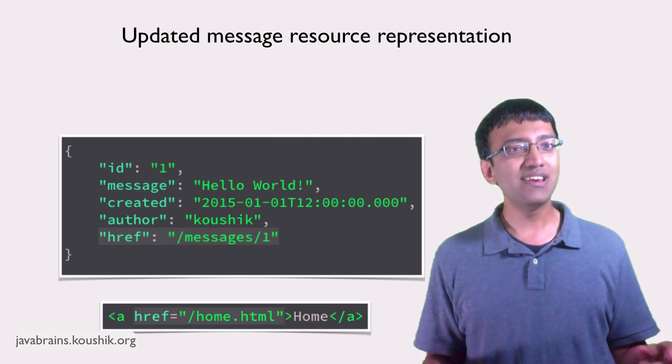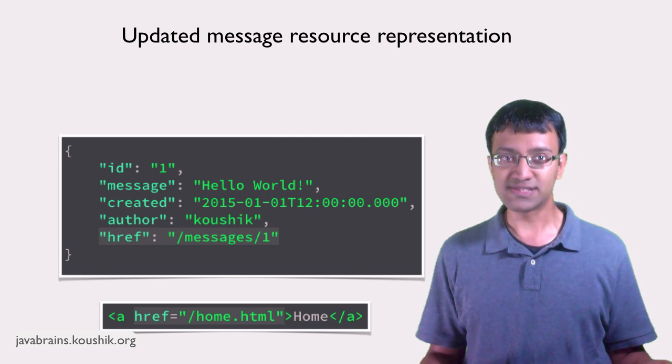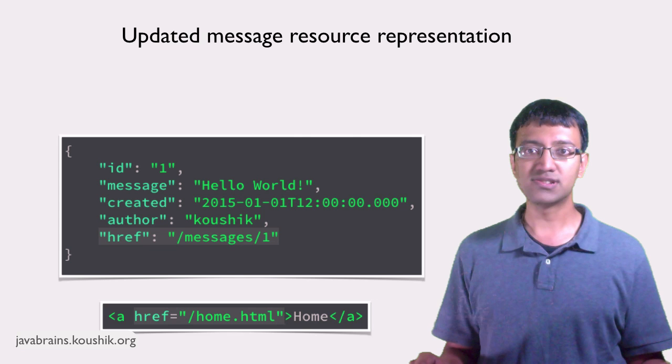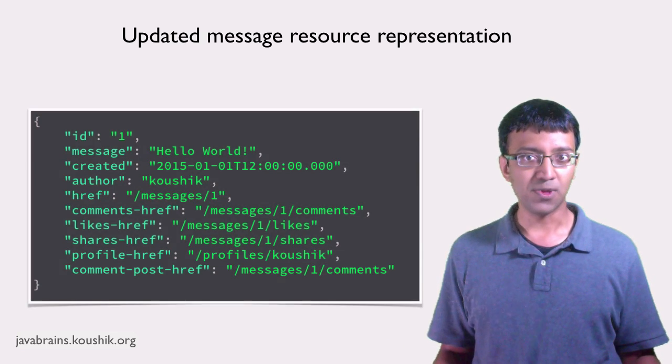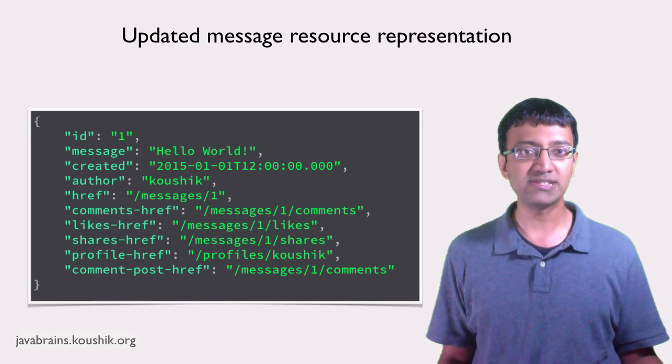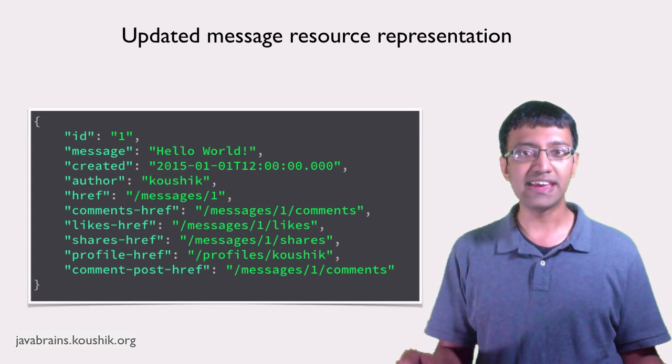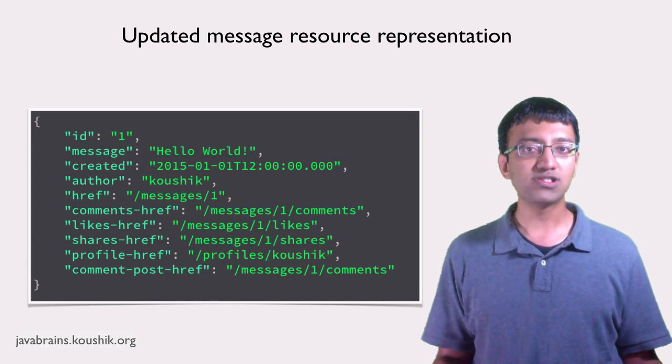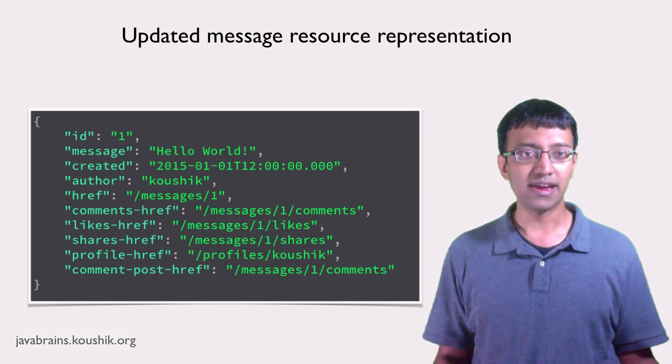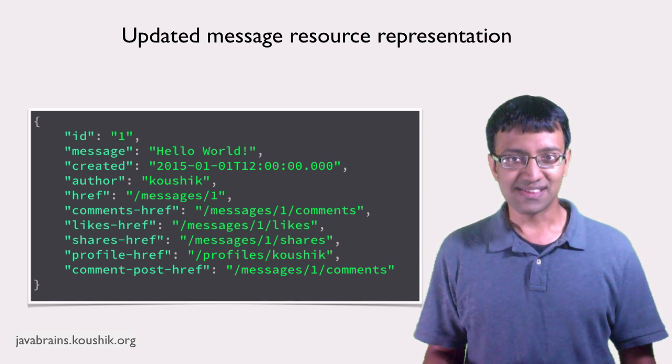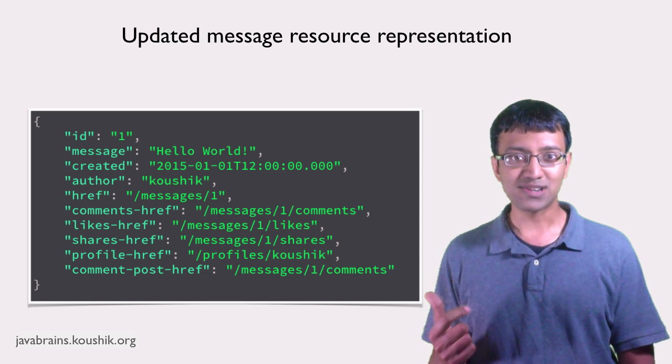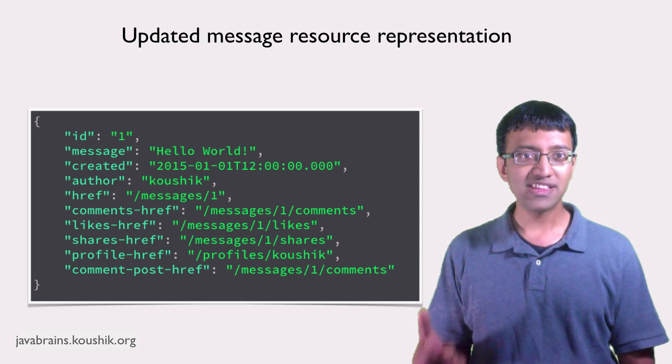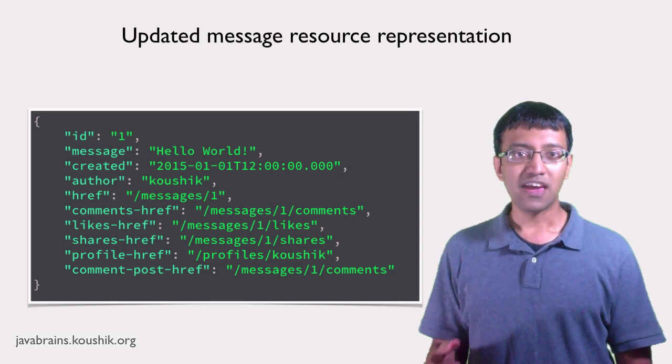But that's not the only link that you can provide. For instance, a message resource could also have links to get all the comments for that message. Okay? And all the likes and shares for that message. You could even have links for the client to post a new comment to that message, right? If you extend this, it could get a bit messy, right? Now look at this response. You have all these different properties.